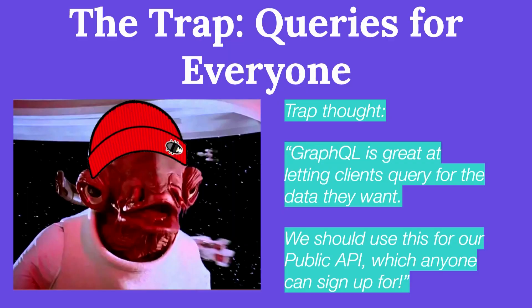Our next trap is queries for everyone. A trap thought you might have is: GraphQL is great at letting clients query for the data they want, so we should use this for our public API, which anyone can sign up for. A public GraphQL API means everyone can easily query data — including people you don't want querying data, and people querying data in ways you don't want them to. Sometimes people request 10,000 items instead of the 50 you expected. In practice, public GraphQL APIs need a way to identify and handle malicious queries, through query cost or complexity analysis, or only allowing a subset of queries, or other such techniques.